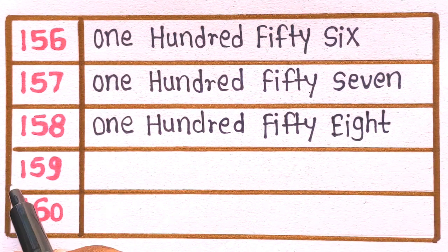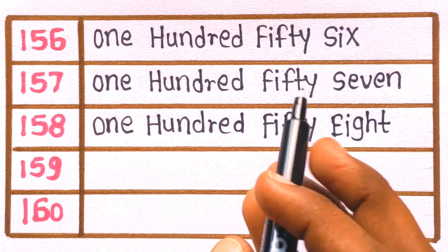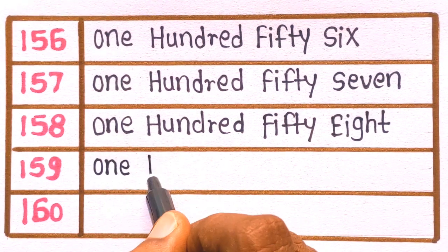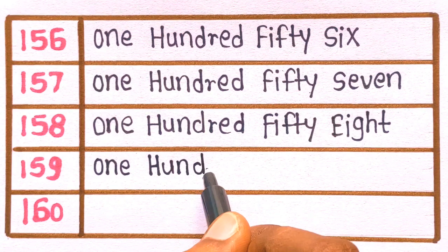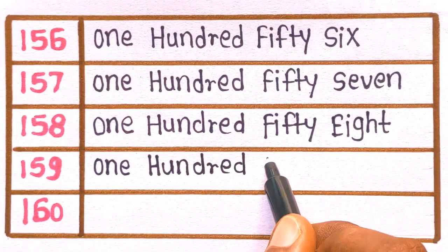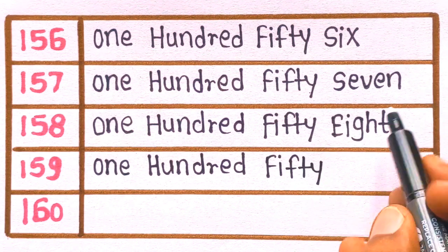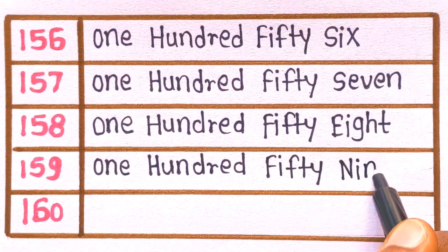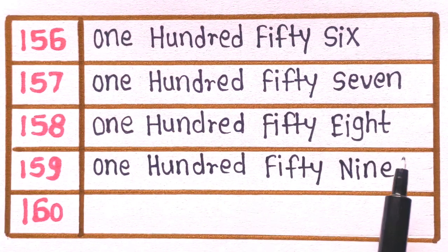Next is 159. O-N-E, one. H-U-N-D-R-E-D, one hundred. F-I-F-T-Y, fifty. N-I-N-E, nine. 159 is one hundred fifty nine.